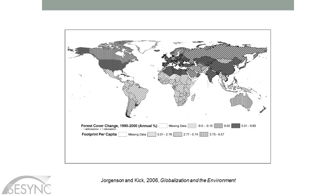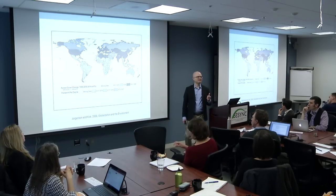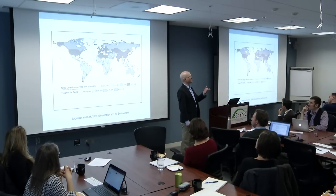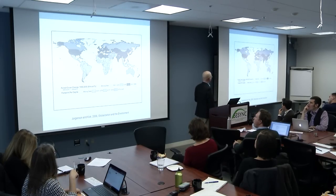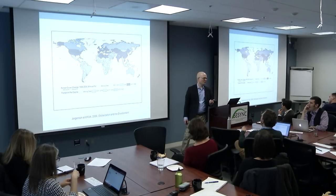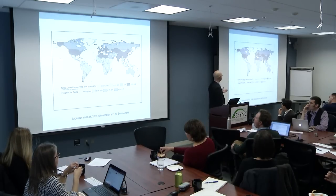A lot of this research is interested in broad dynamics. There's a long-standing argument about environmental load displacement and consumption-environmental degradation paradoxes when we look at relationships between higher-consuming, more affluent nations relative to environmental impacts within their borders. If we look at something like the ecological footprint per capita of nations — highly correlated with their levels of economic development — there tends to be a negative correlation between that and deforestation within the borders of those nations simultaneously.